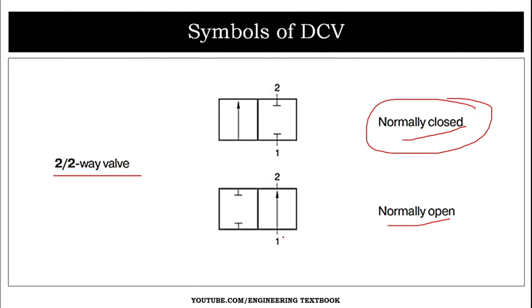In the normally open position, port one and port two are connected to each other, so oil is flowing through the DCV. This is known as the normally open position.